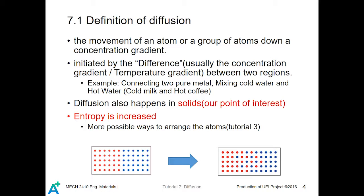There are several examples in daily life. We can mix water at different temperatures — for example, mixing cold water with hot water gives you warm water. If you mix milk and coffee, you cannot distinguish one from the other because they are mixed. That mixing is done by diffusion. However, diffusion also happens in solids, and that process is our primary point of interest.